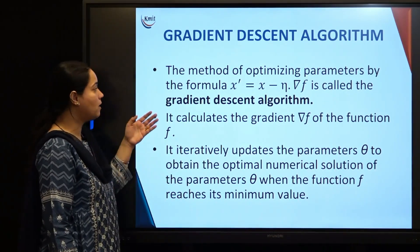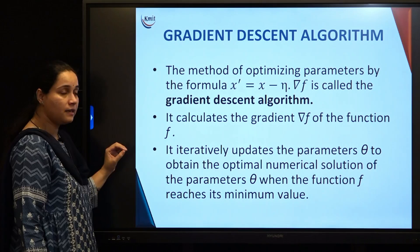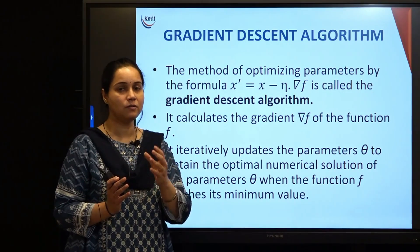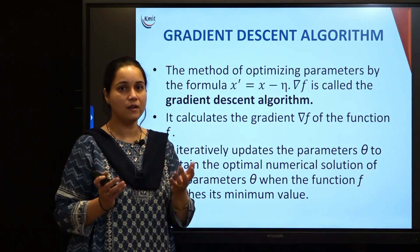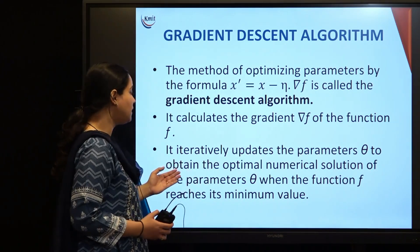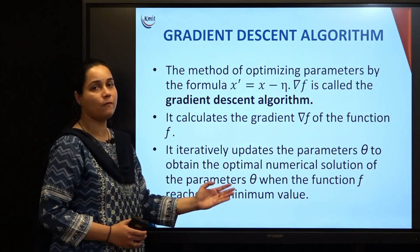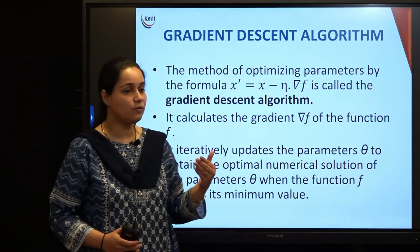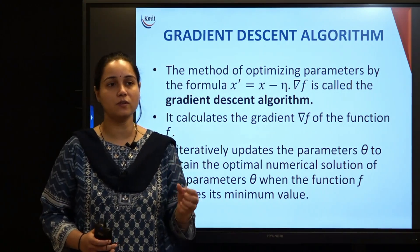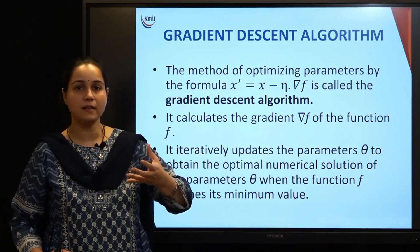This method of optimizing and updating parameters step by step is called the gradient descent algorithm. It calculates the gradient nabla f of a function and iteratively updates the parameters. If we denote the parameters — weight and bias — by a single vector theta, it iteratively updates theta to obtain the optimal numerical solution when the function f reaches its minimum value.